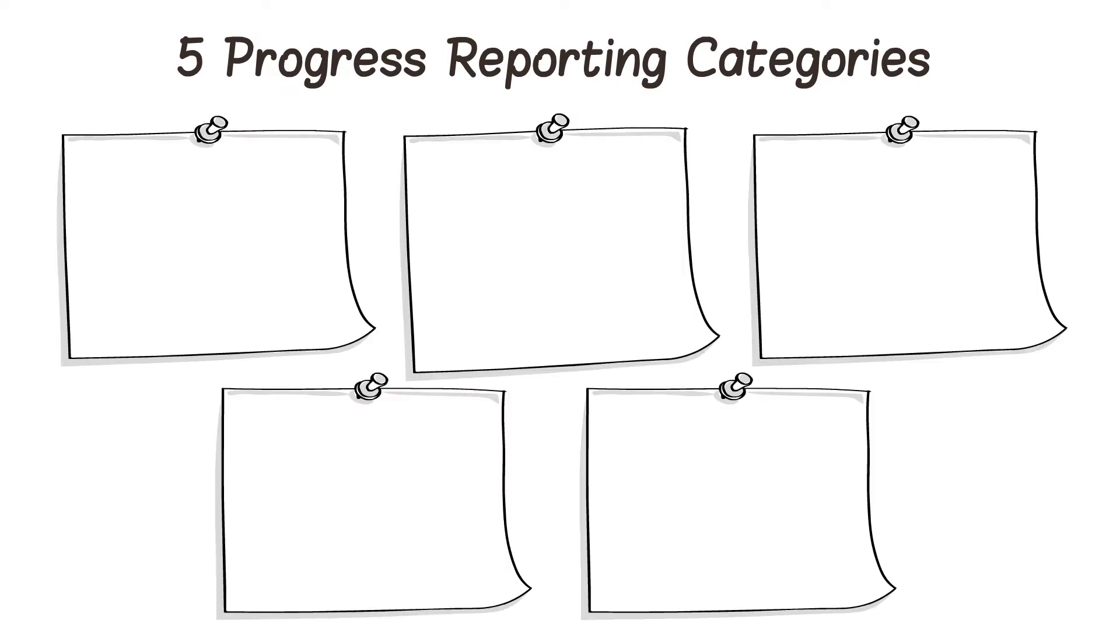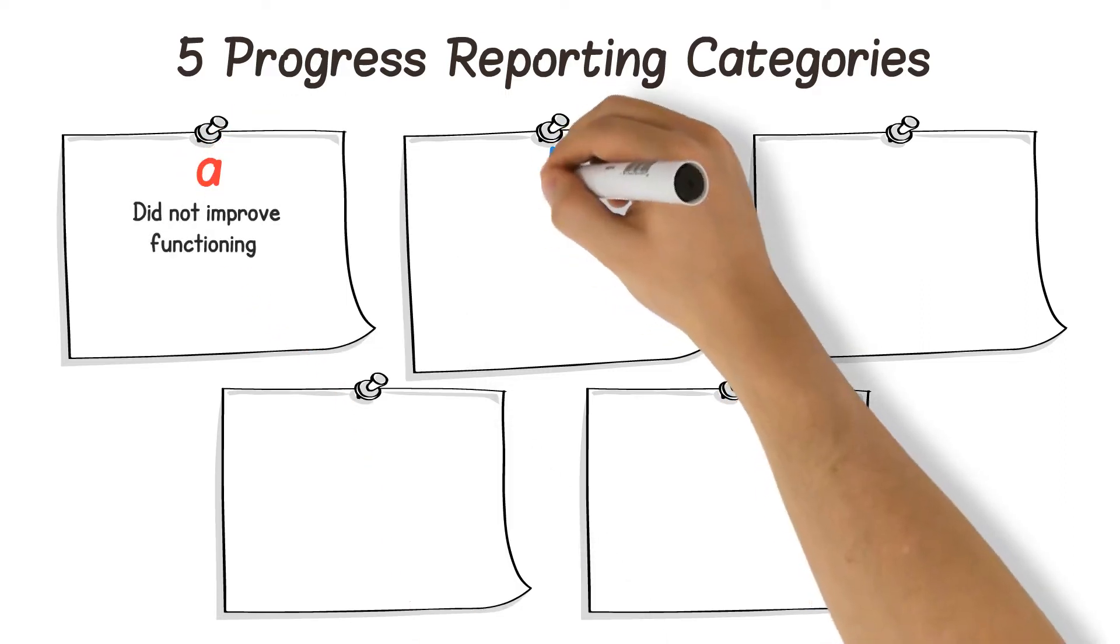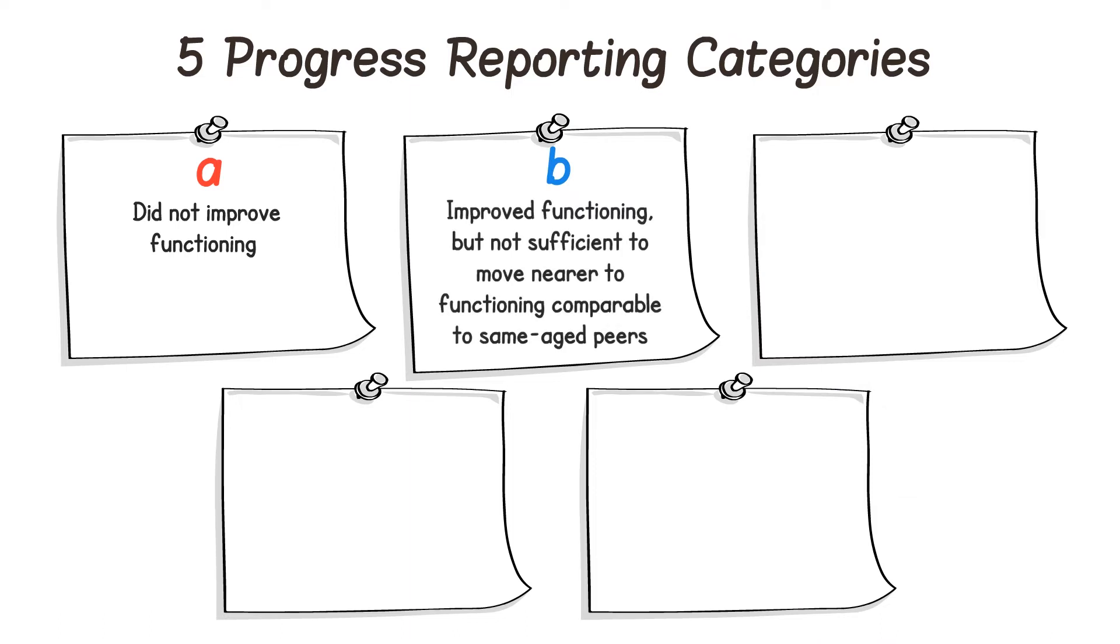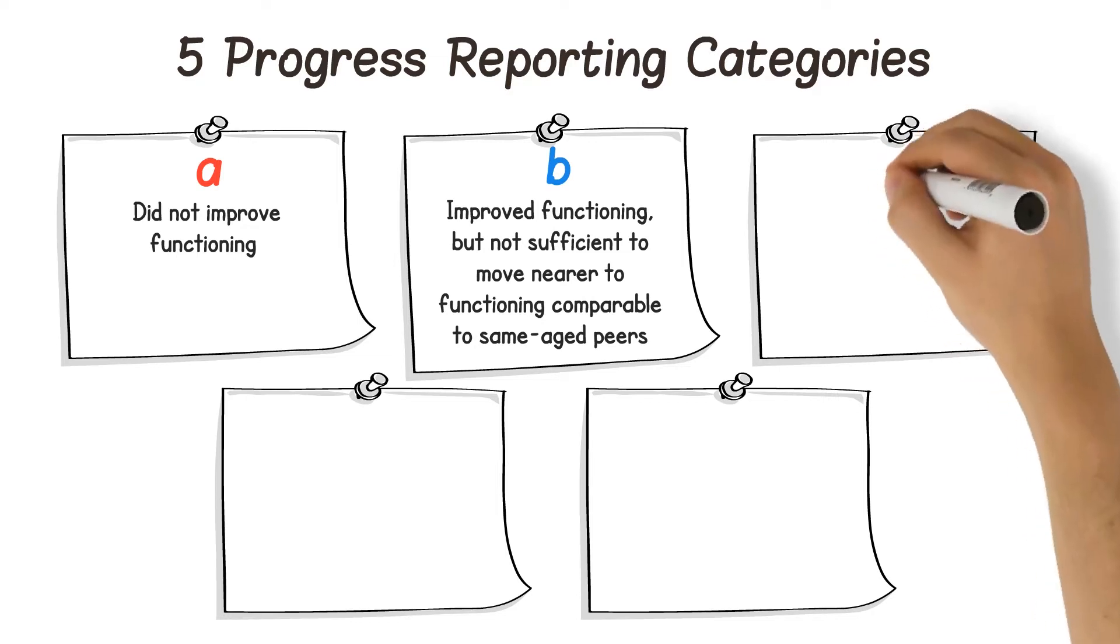let's start with the progress reporting categories. There are five progress reporting categories, each representing progress between entry and exit. When reporting progress data, states identify the percentage of children who A. Did not improve functioning, B. Improved functioning but not sufficient to move near to functioning comparable to same-age peers,